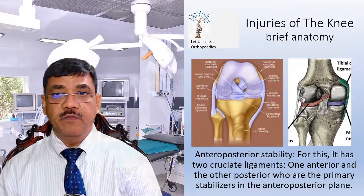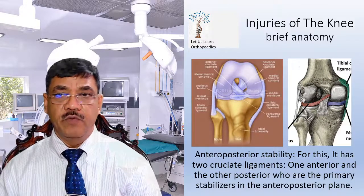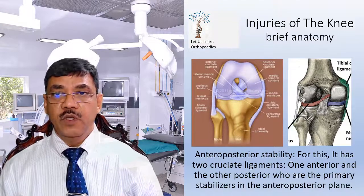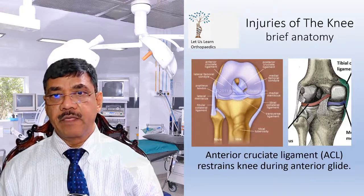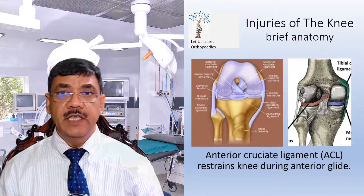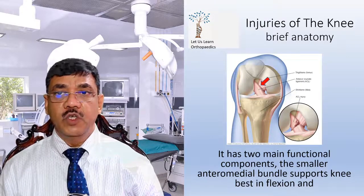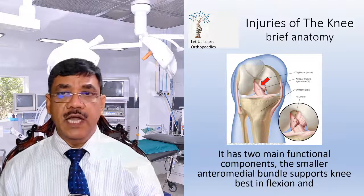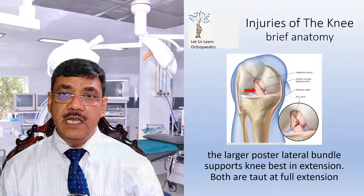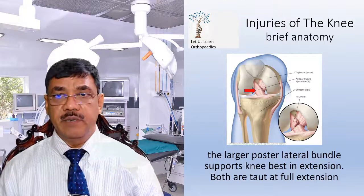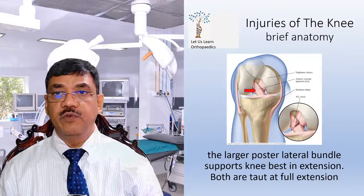For antero-posterior stability, the knee has two cruciate ligaments, one anterior and one posterior, which are the primary stabilizers in the antero-posterior plane. The anterior cruciate ligament, ACL, resists the knee during anterior glide. It has two main functional components: the smaller antero-medial bundle supports the knee in flexion, and the larger posterolateral bundle supports the knee in extension. Both are taut at full extension.